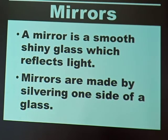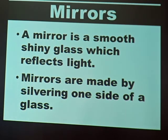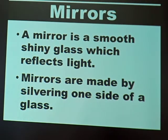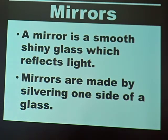How are these mirrors made? Any mirror you have at home is made by silvering — that is, by silvering one side of a glass. You can also say that mirrors are made by painting one side of a glass. We silver or paint one side of the glass in order to make it opaque, so that it will be able to reflect light.